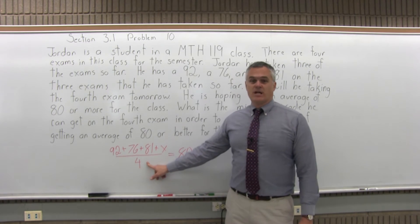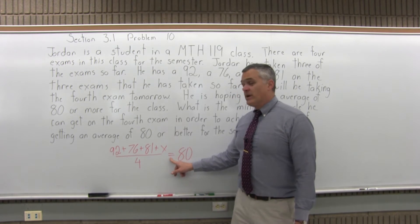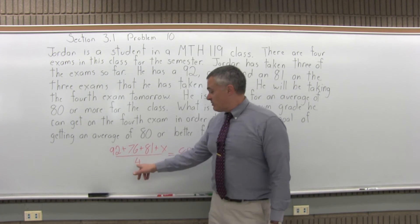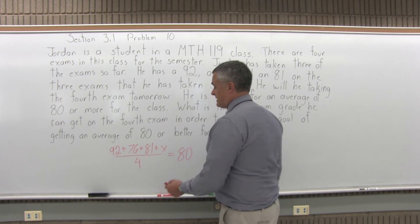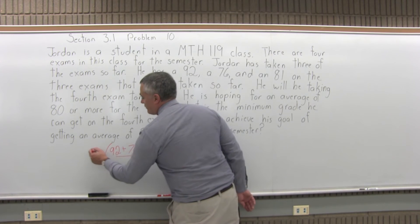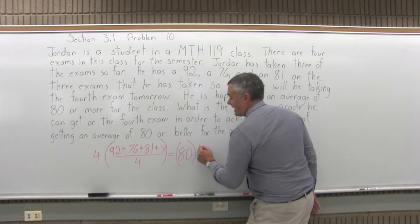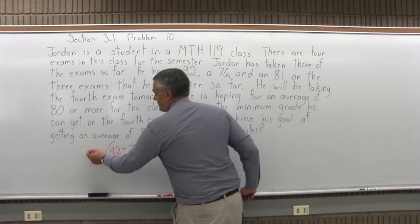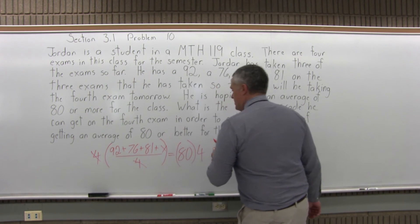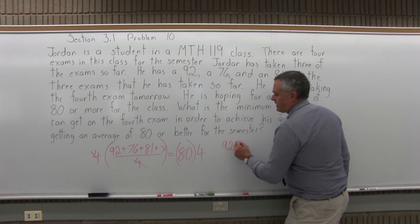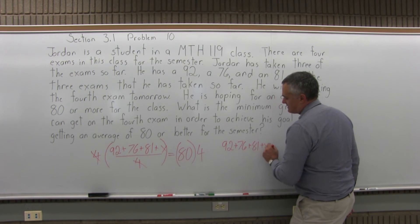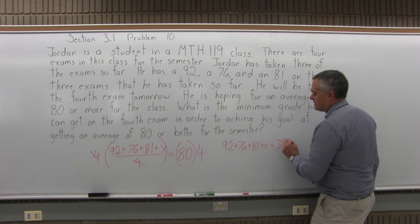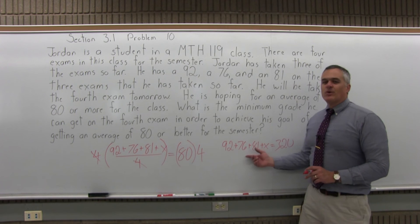The first thing I'd like to do is eliminate the fraction. Since we have an equation, I can do anything I want as long as I do the same thing on both sides. So I'm going to multiply both sides by four to cancel the denominator. On the left side, four times some stuff over four makes the fours cancel, leaving just the numerator. So after canceling the four, I have 92 plus 76 plus 81 plus the grade for exam four equals, on the right side, 80 times four, which is 320.